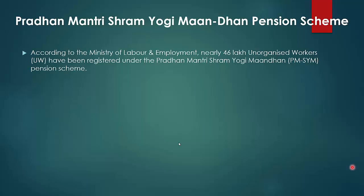That was all about private members of Parliament and how they can bring private bills. Next, our topic is Pradhan Mantri Shram Yogi Maanadhan Pension Scheme. According to the Ministry of Labour and Employment, nearly 46 lakh unorganized workers have been registered under the PM Shram Yogi Maanadhan Pension Scheme.